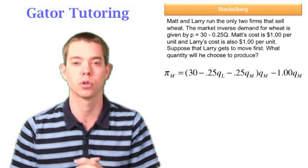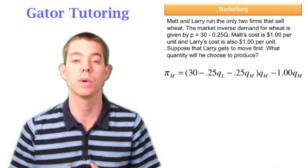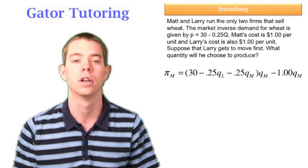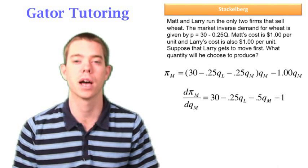So if we know how Matt will react to a choice by Larry, and we're Larry, we would like to use that information in our profit function to maximize profit since we're moving first. So first we want to find Matt's reaction function.